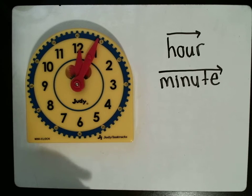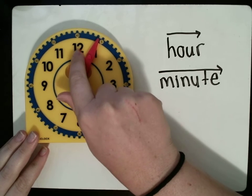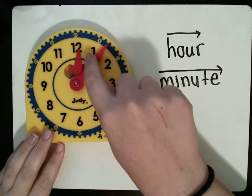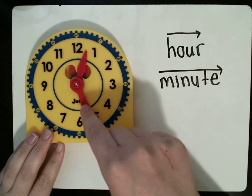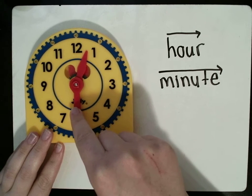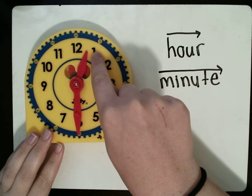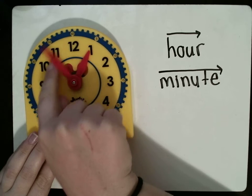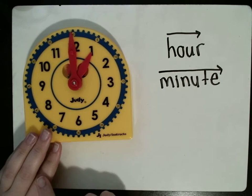So, the hour hand, whatever number it's on or in between, you're just going to tell me what that number is. So, if it's right here, it's in between the 12 and the 1, but it is still 12 o'clock. It will not be 1 o'clock until the minute hand has gone all the way around and it is directly on the 1.